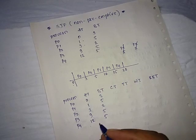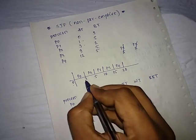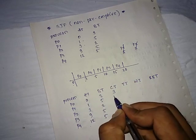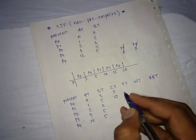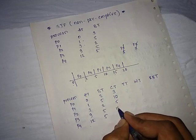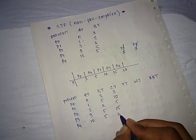Completion time can be calculated from this Gantt chart. Completion time for P0 is 3, P1 is 10, P2 is 5, P3 is 15, and for P4 it's 20.